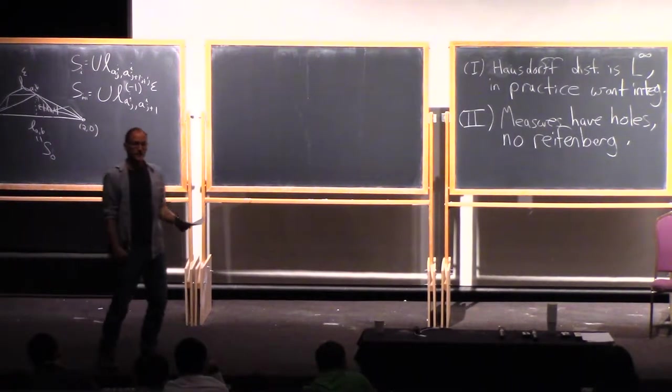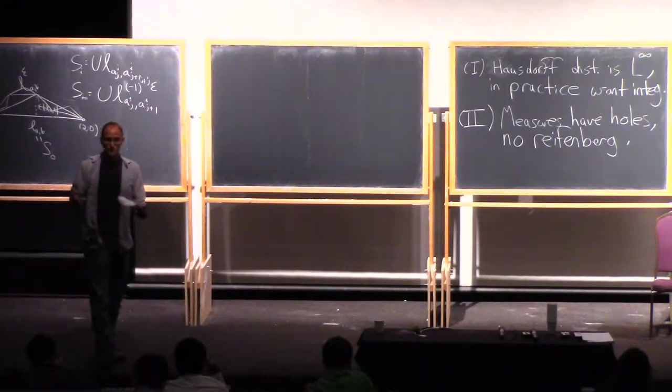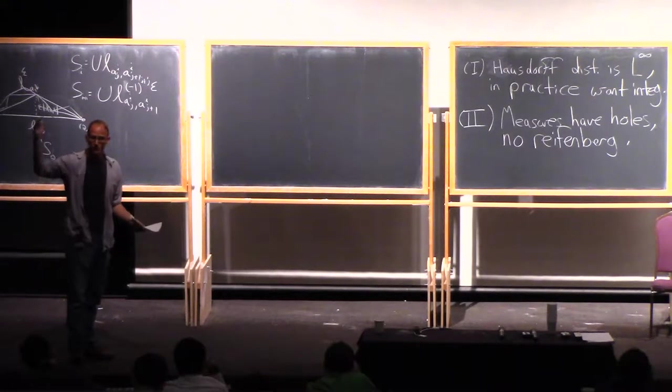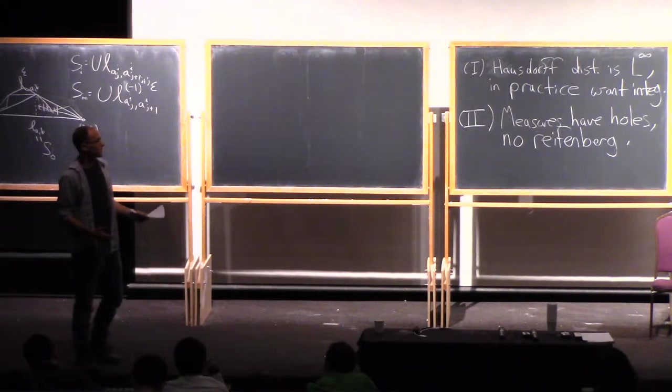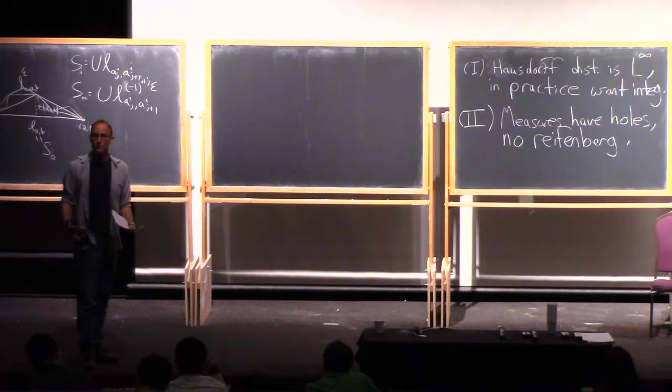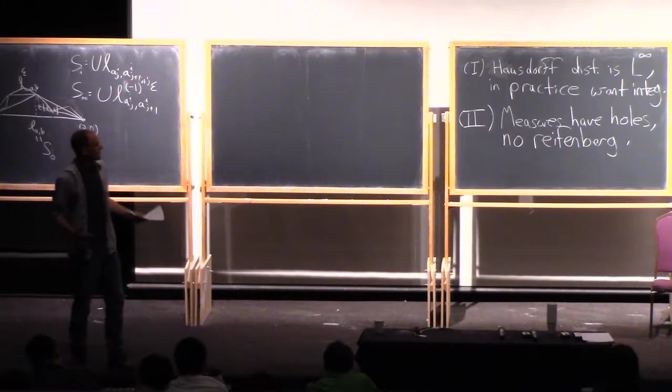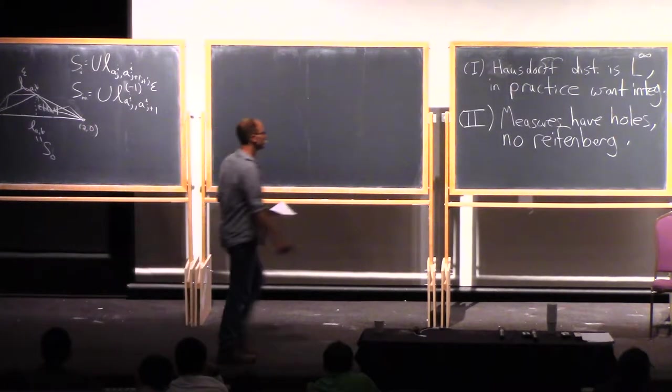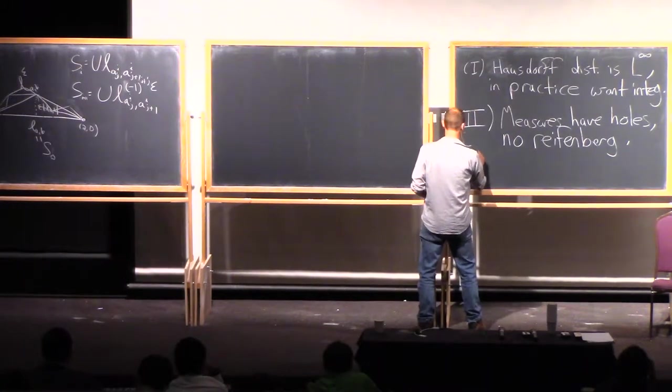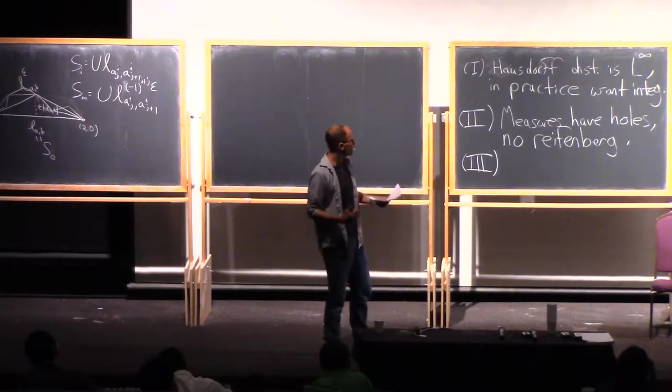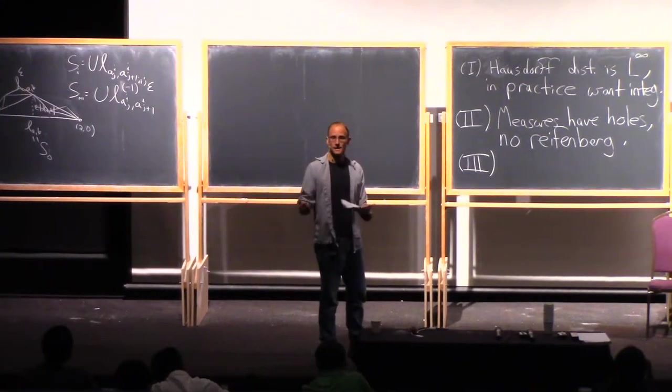So that might sound like a deal breaker, but what happens is basically the following, that this is where the notion of a neck region is gonna come into play and the notion of a neck decomposition. A general measure is a general measure, but we will break it into pieces where it turns out if we have some sort of integral control, even if it's some large number on our beta numbers, it turns out that most pieces, there will be lots of balls for which it will have sort of a weak version of the Reifenberg condition.